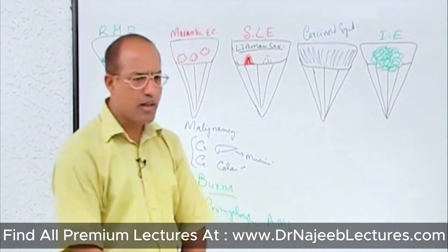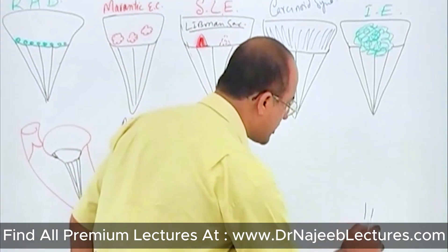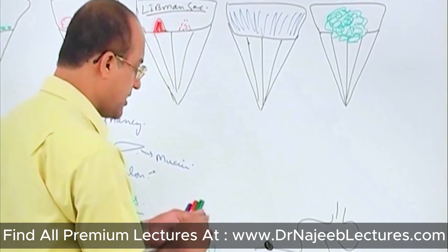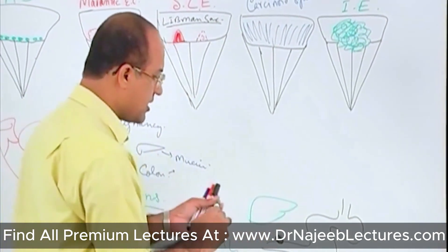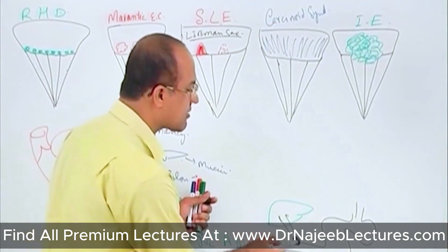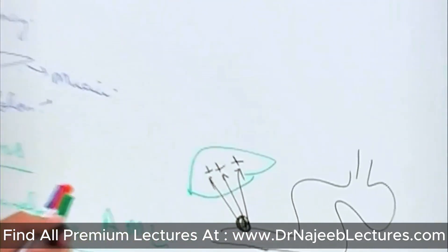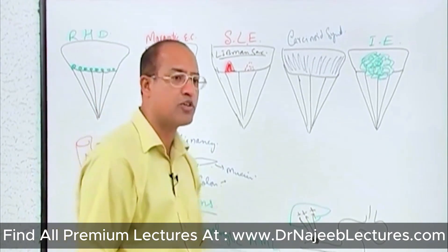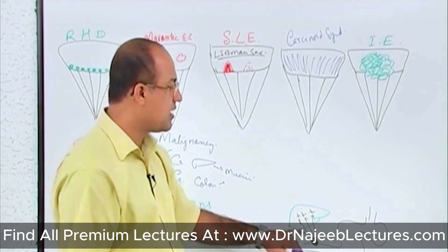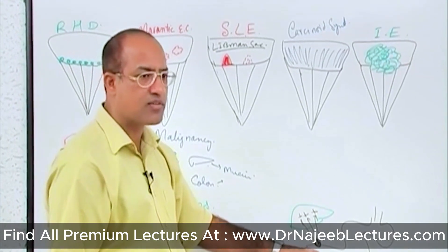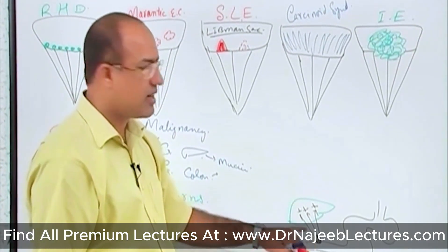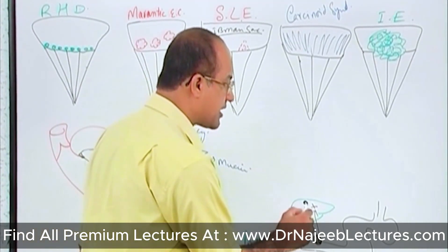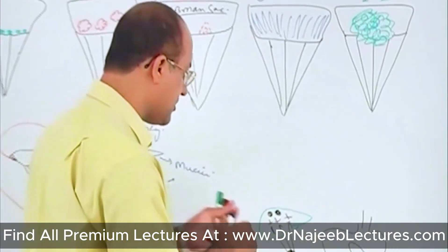Now we come to carcinoid syndrome. Carcinoid tumors are normally formed within the GIT. If a carcinoid tumor in the GIT is producing biologically active products — such as serotonin, calcitonin, bradykinin, or histamine — these products are usually destroyed within the liver through portal circulation. But if the primary tumor gives metastases into the liver, then what really happens is...